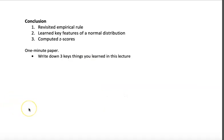So to conclude, today we revisited the empirical rule. We learned some key characteristics of a normal distribution and learned how to compute a z-score. I want you to take 60 seconds to write down three things you learned.